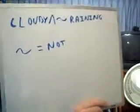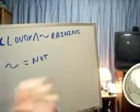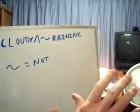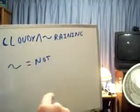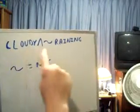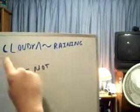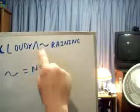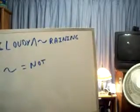Here's how it's used. Let's say you go outside, you look at the weather, and it's cloudy. You can say it is cloudy and it is not raining — cloudy, and remember that from a previous video, cloudy and not raining. And that's how that works.